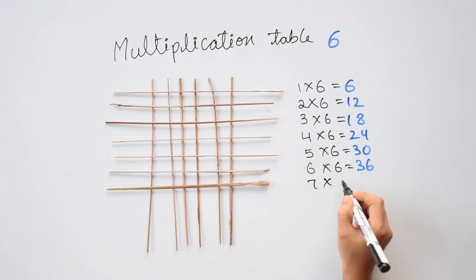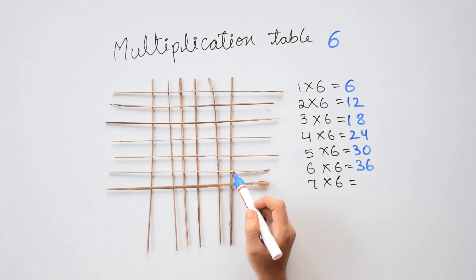Next, 7 times 6 equals to, till here it's 36, 37, 38, 39, 40, 41, 42. 7 times 6 is 42.